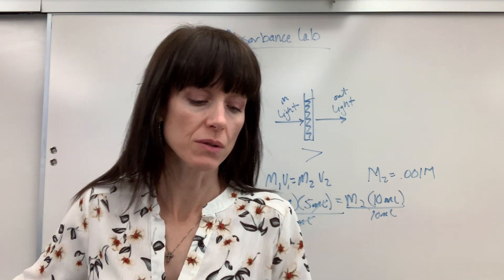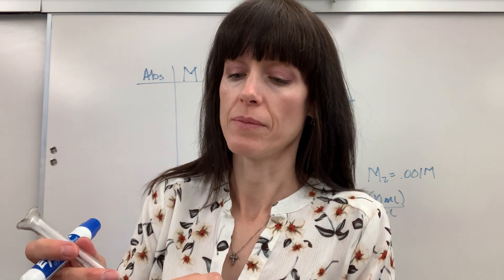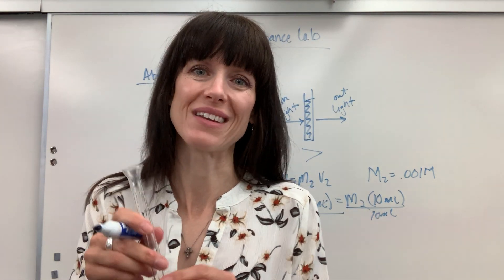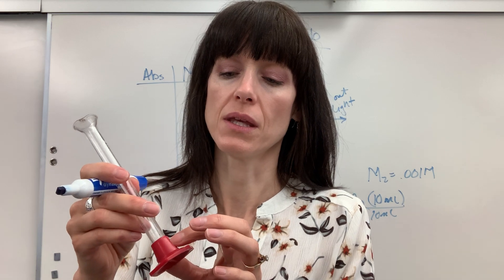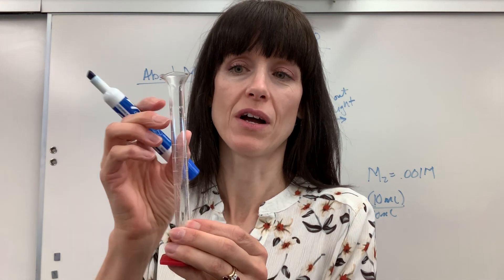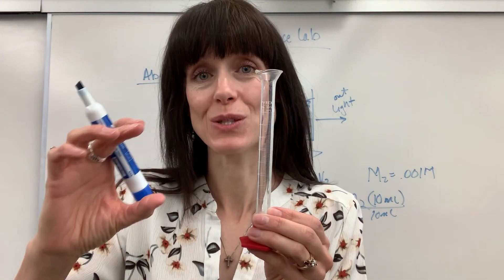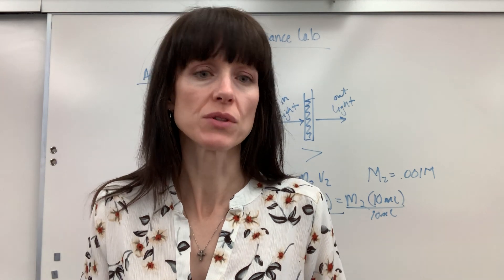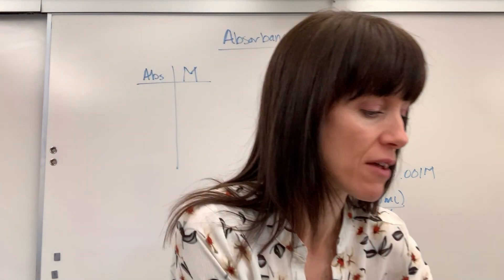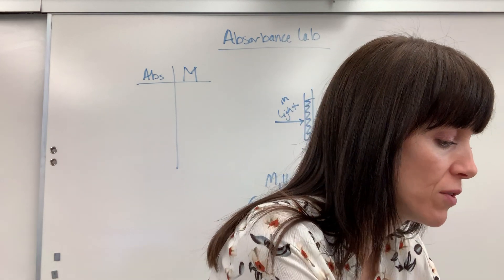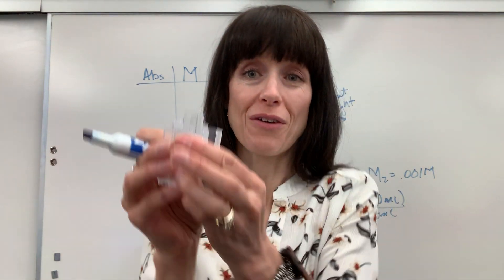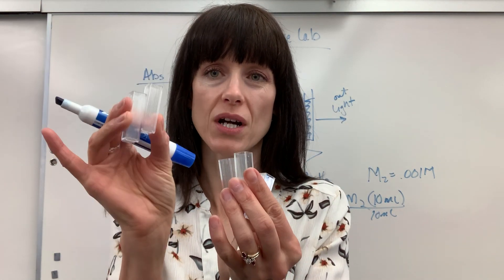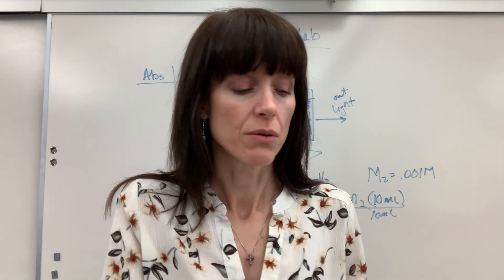You keep doing dilutions — maybe using 2.5 mils and 1 mil, each brought to a volume of 10. You can also do a serial dilution, where you take one diluted solution and make a further dilution from it. I recommend students do at least five dilutions total, giving five cuvettes with a gradient of color going from dark red all the way down to a very light red.